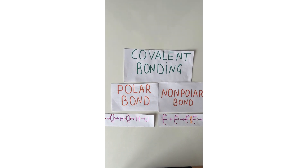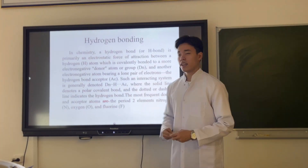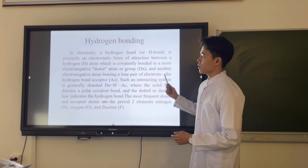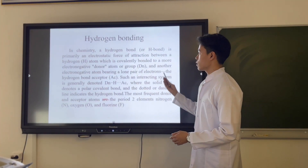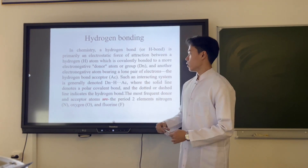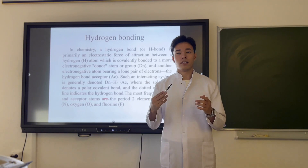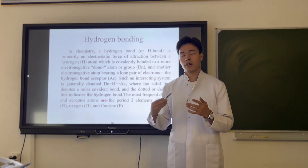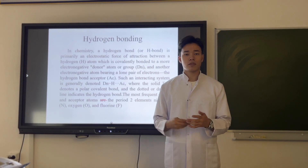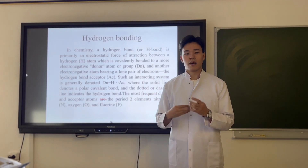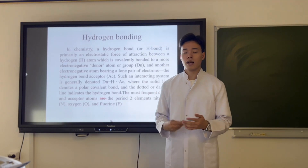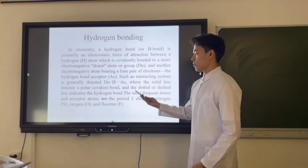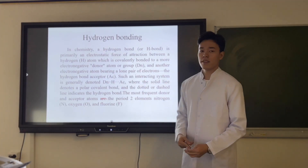The next is hydrogen bonding. In chemistry, a hydrogen bond is primarily an electrostatic force of attraction between a hydrogen atom, which is covalently bonded to a more electronegative donor atom, and another electronegative atom bearing a lone pair of electrons — the hydrogen bond acceptor. Such an interacting system is generally denoted where the solid line denotes a polar covalent bond and the dotted line indicates the hydrogen bond. The most frequent donor and acceptor atoms are the elements nitrogen, oxygen, and fluorine.